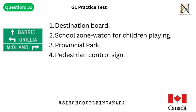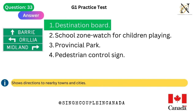Question 33. This traffic sign means: 1. Destination board. 2. School zone, watch for children playing. 3. Provincial park. 4. Pedestrian control sign. Answer is 1. Destination board — shows directions to nearby towns and cities.